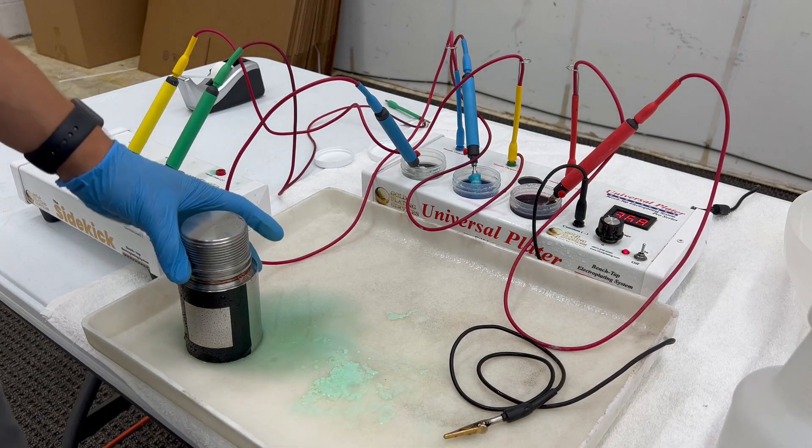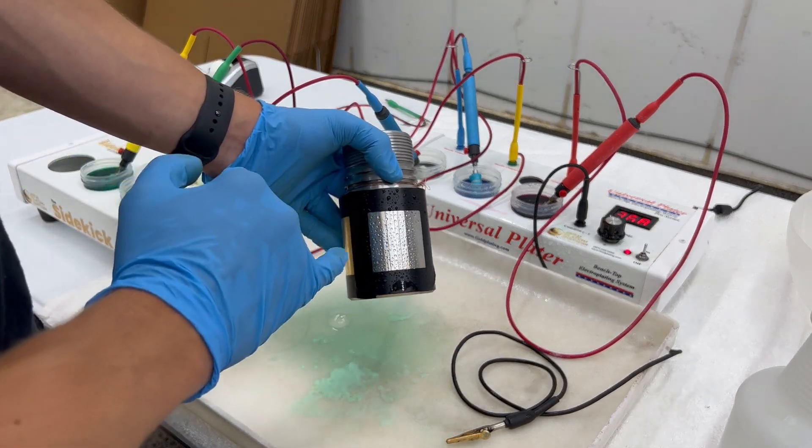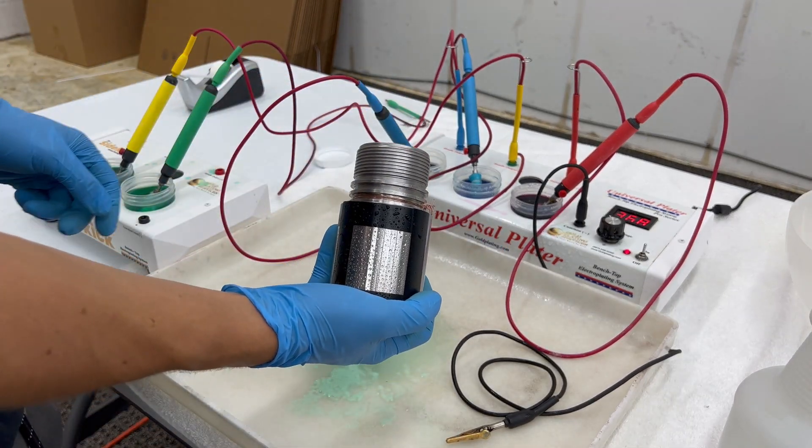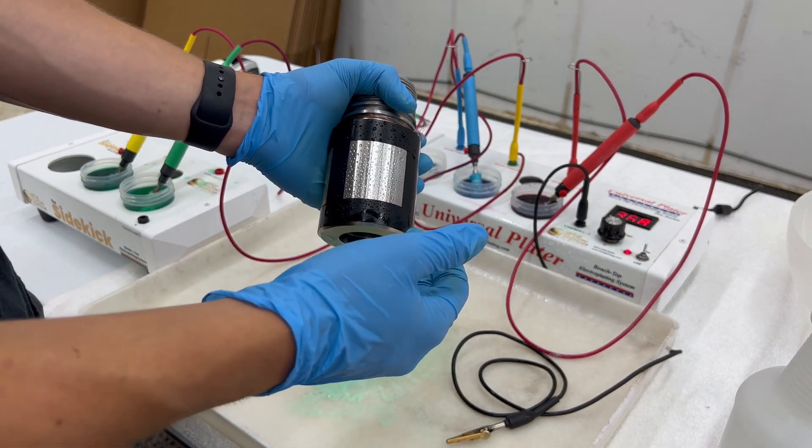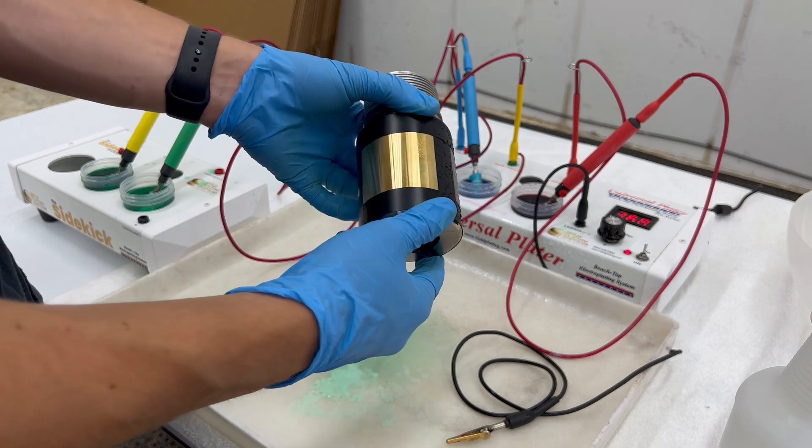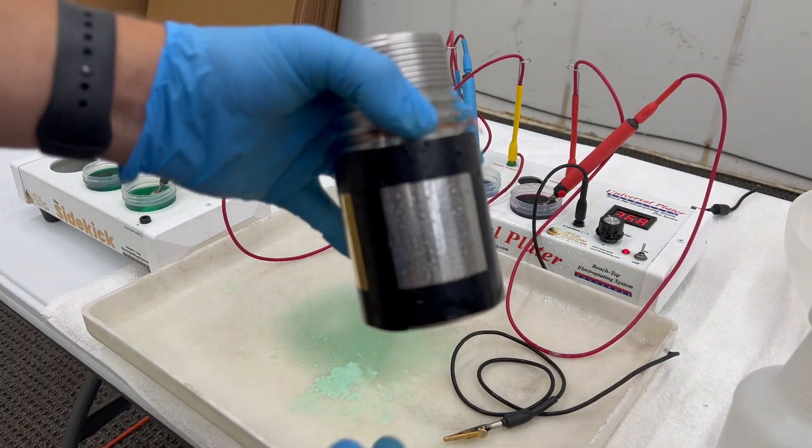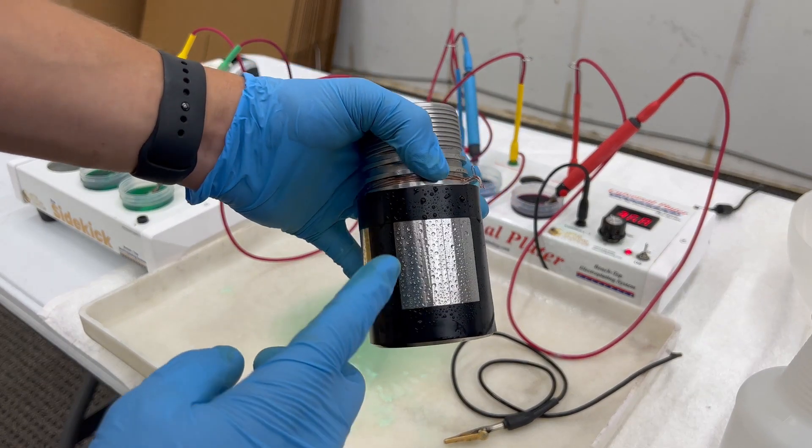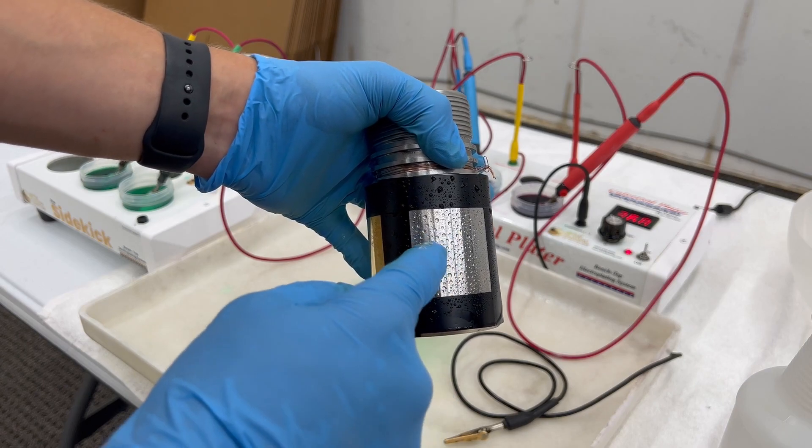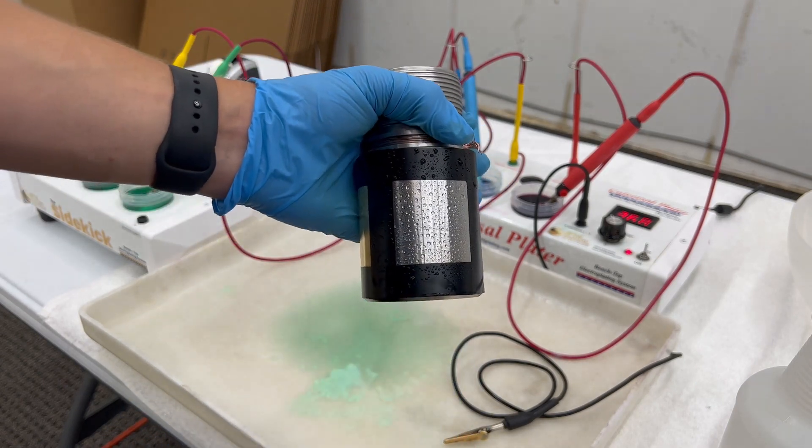Now the next step in this process—I'm going to actually plate this side and use the woods nickel strike in this process as an add-on just so we can see the difference if you don't use it and if you do use it. Just like before, we are going to need to use that electro clean and prevent it from beading on the metal.